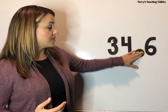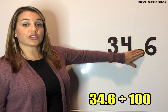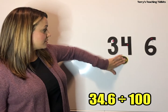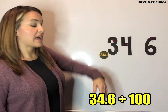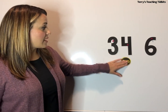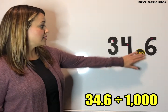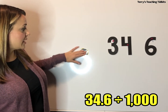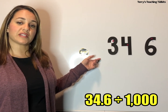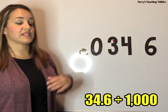If you take the same original number of 34 and 6 tenths and divide by a hundred, you move the decimal point two places to the left and end up with 346 thousandths. If you divide by a thousand, you move it three places — one, two, three. You have to fill the open tenths place with a zero, and now you have 346 ten-thousandths.